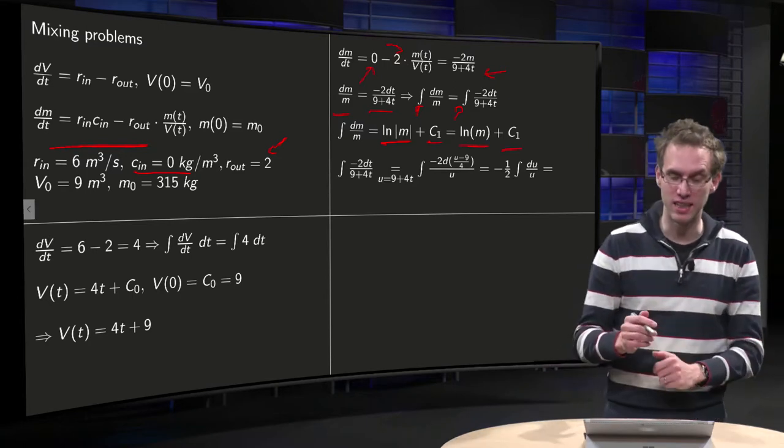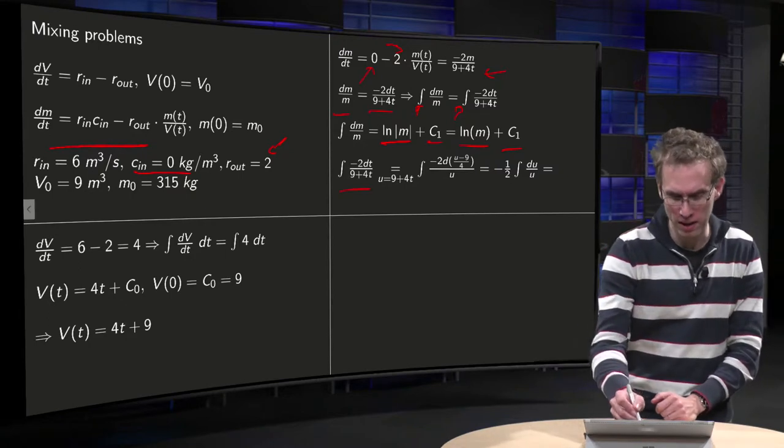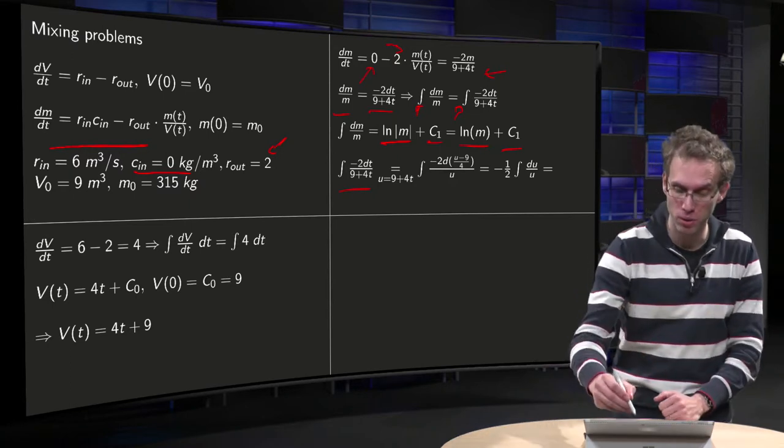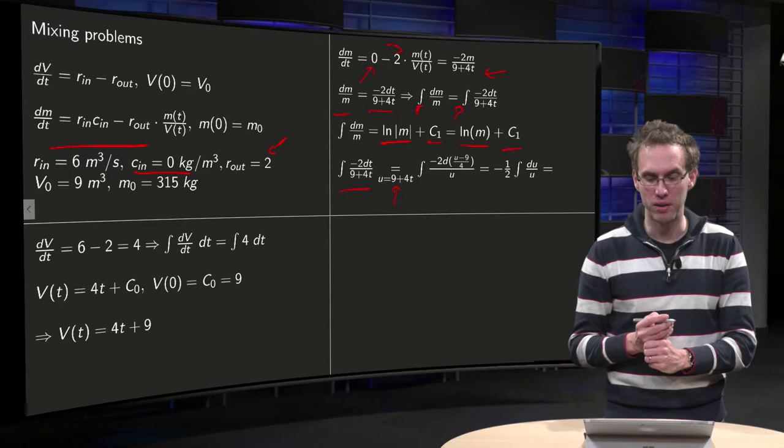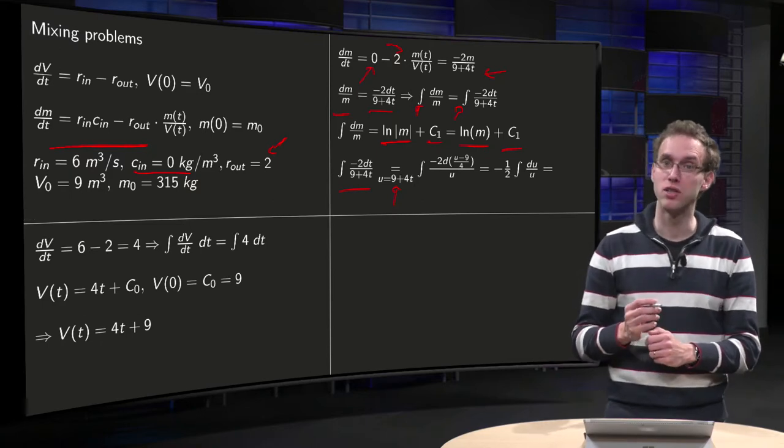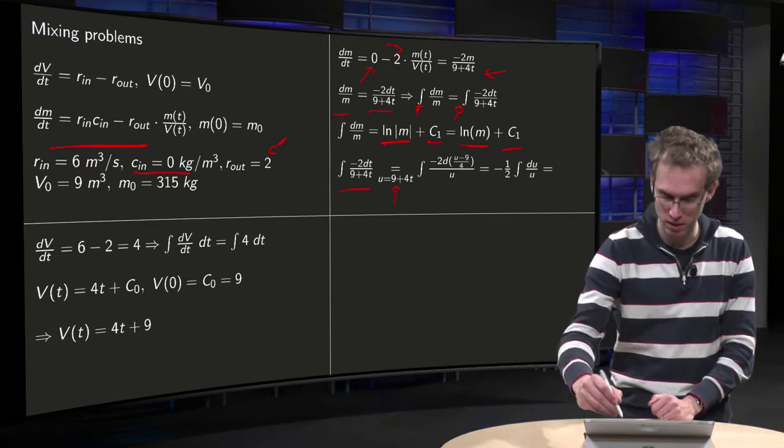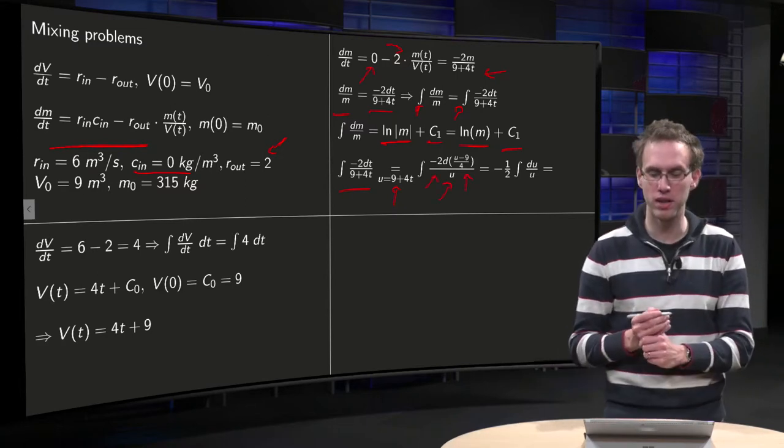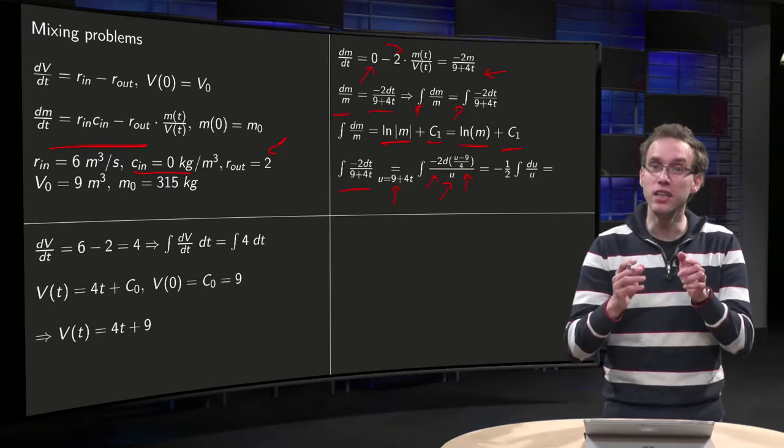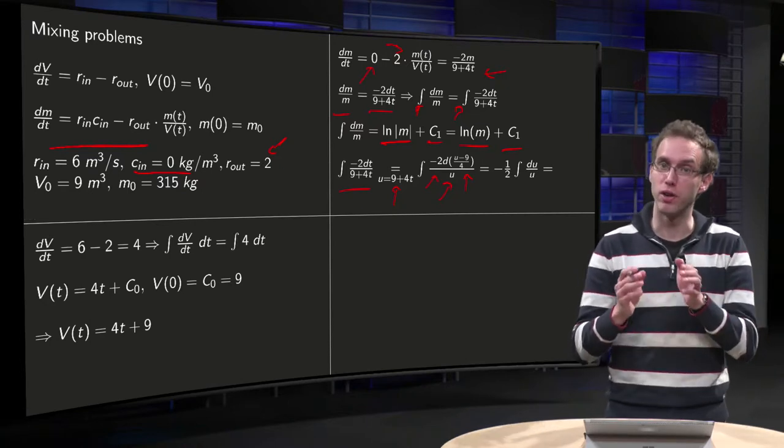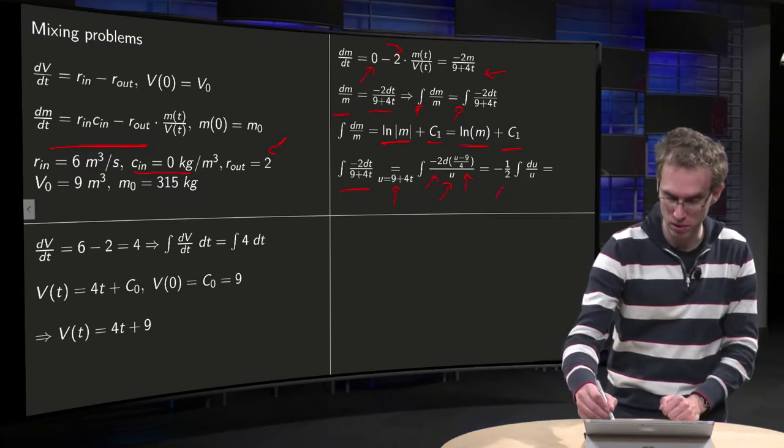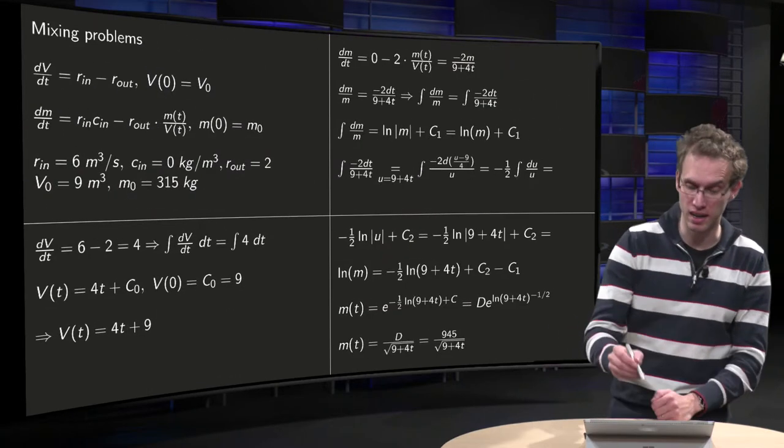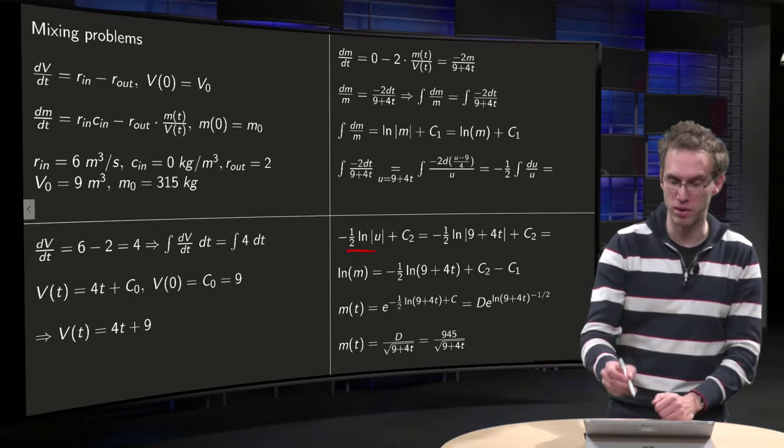Then we have to integrate the right-hand side. Well, it looks messy, but it's not so bad. We have to integrate minus 2 over 9 plus 4t. You can use the substitution rule, then you have u equals 9 plus 4t, so u minus 9 over 4 equals t. So that comes over here, here you get your u and your minus 2 is in place. So your du minus 9 over 4 is just 1 over 4 times du is the factor. Minus 2 gives you minus 1 half du over u, which you can integrate directly, equals minus 1 half ln u absolute value plus some constant.